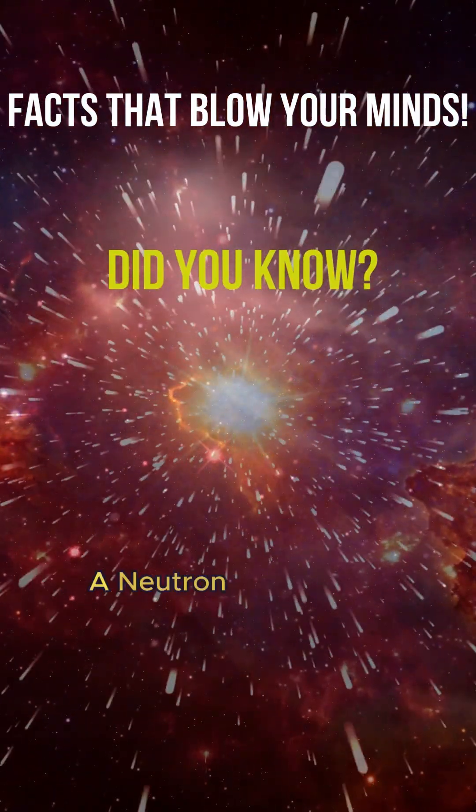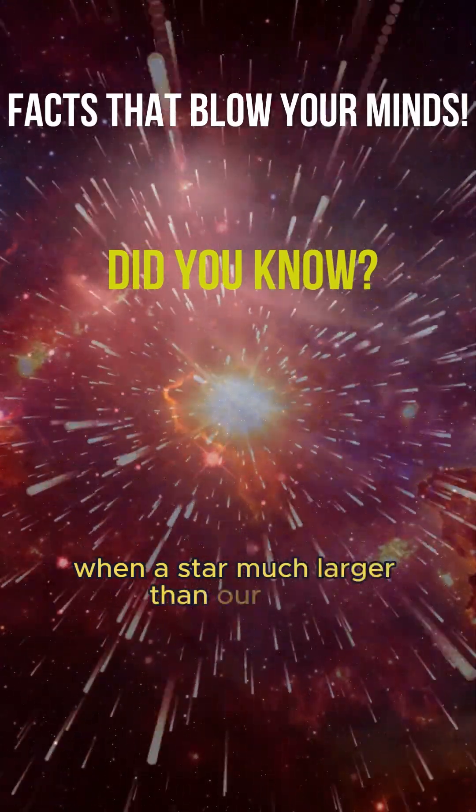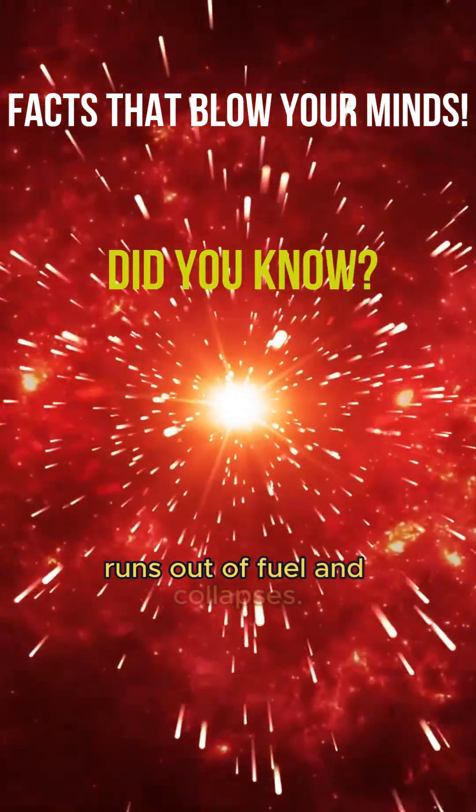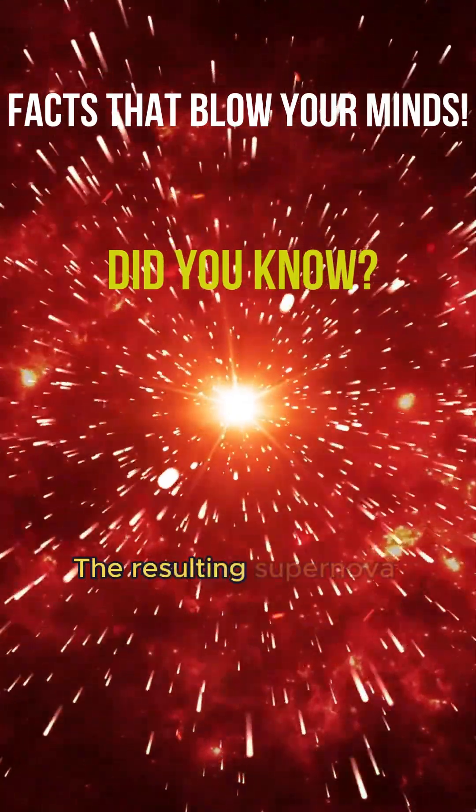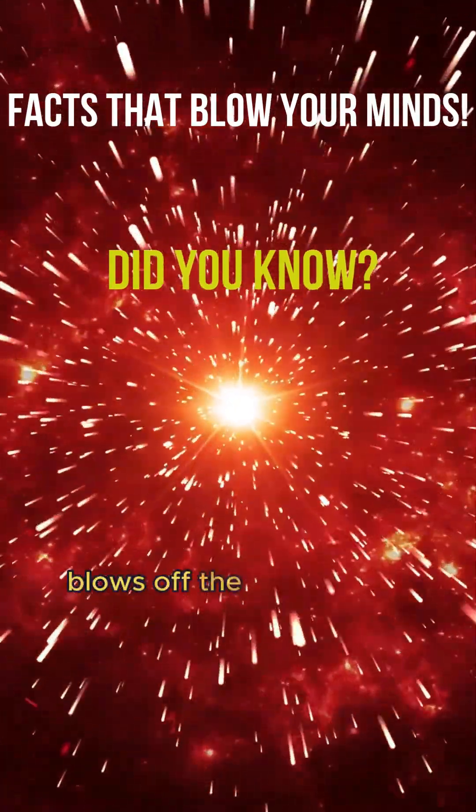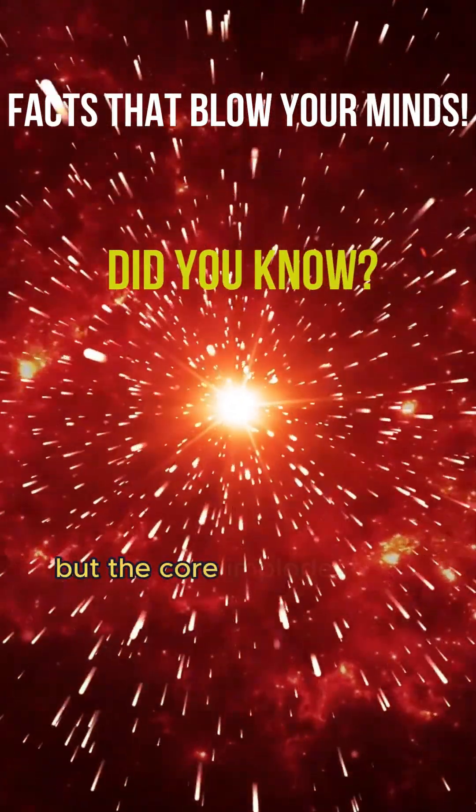A neutron star is born when a star much larger than our sun runs out of fuel and collapses. The resulting supernova explosion blows off the outer layers, but the core implodes.